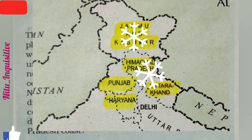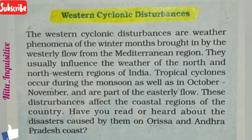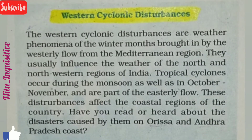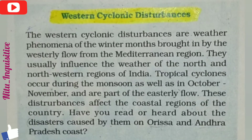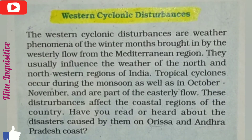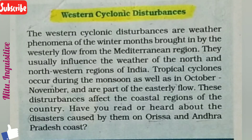Due to high altitude or high elevated areas, snowfall occurs in Jammu & Kashmir, Himachal Pradesh, Uttarakhand, and some northeast parts of the Himalayan region. So you might ask: what is the benefit of Western Disturbance if rainfall is happening in Punjab, Haryana, and Rajasthan in winters, and snowfall is occurring in Jammu & Kashmir, Himachal Pradesh, and Uttarakhand?